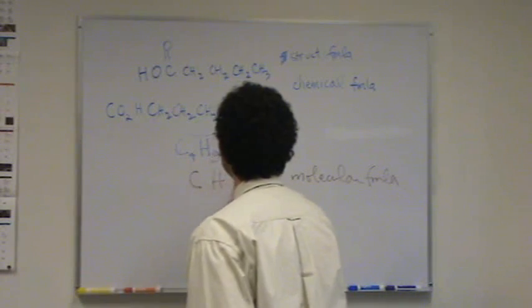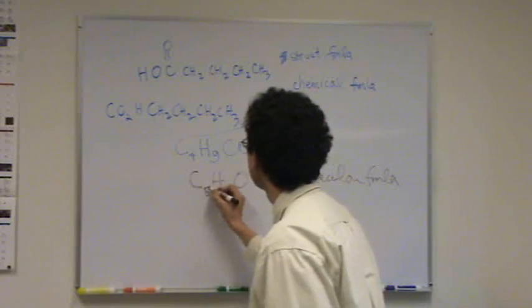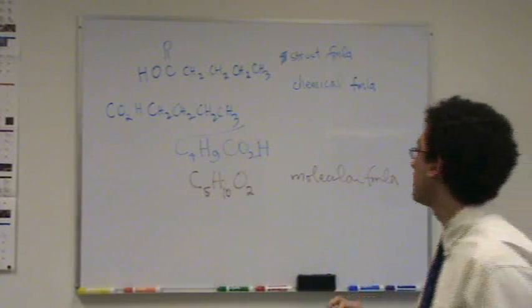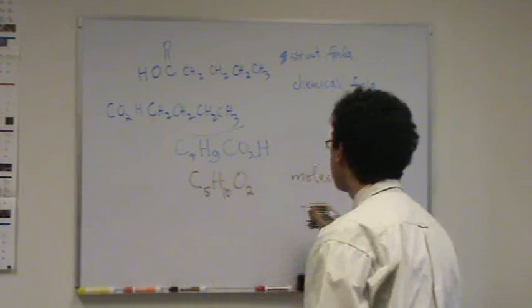The molecular formula is when we list each atom and the number. So it would be - there's carbon, there's hydrogens, and there's oxygens. The number of carbons is 5, hydrogens is 10, oxygens is 2. And then,